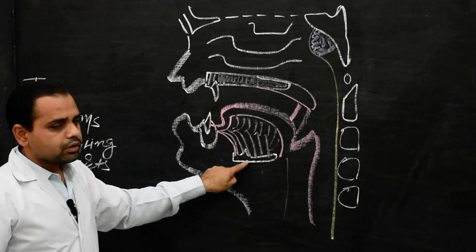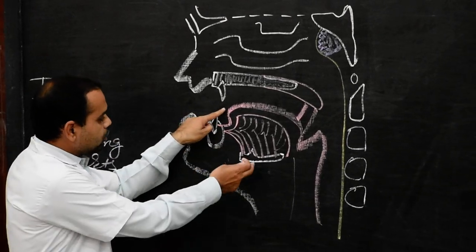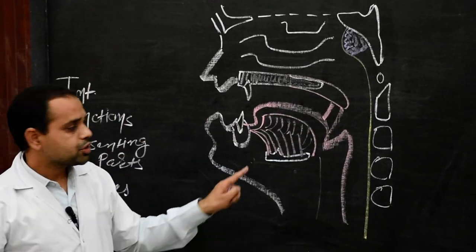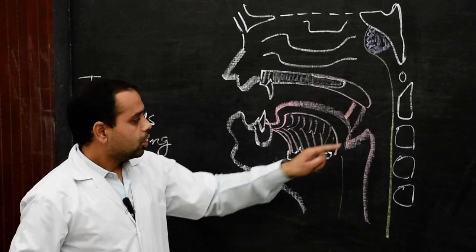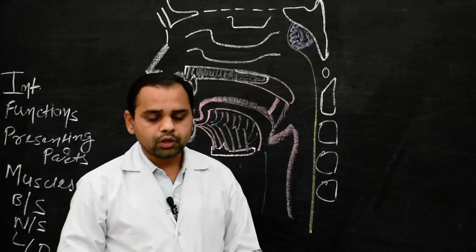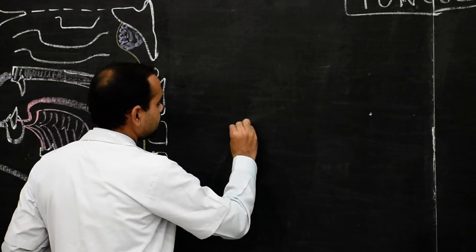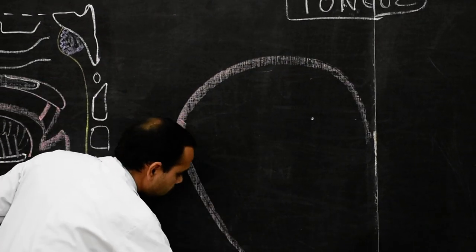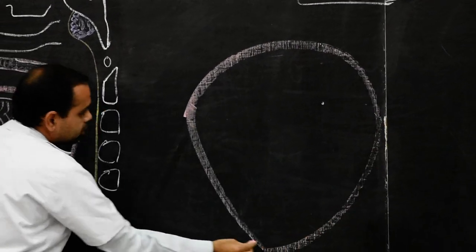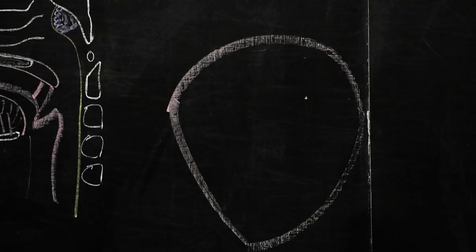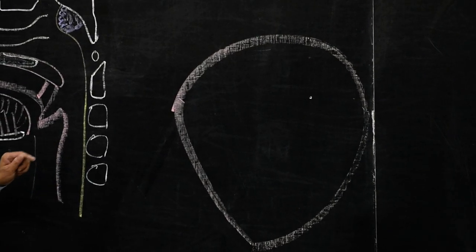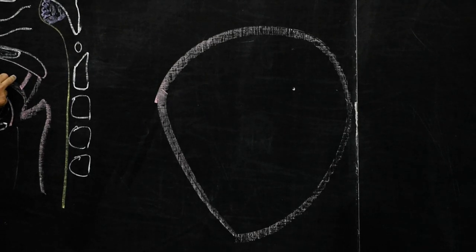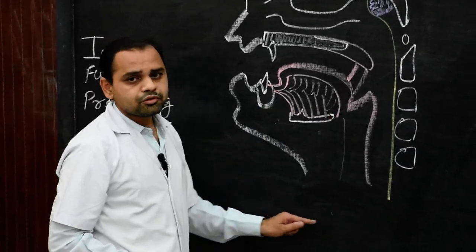This is the tip of the tongue, and this is known as the root of the tongue. Between the tip and root of the tongue, this whole portion is known as the body of the tongue. Here I will draw the diagram of the body of the tongue. This is the body of the tongue, and the body of the tongue has two surfaces.